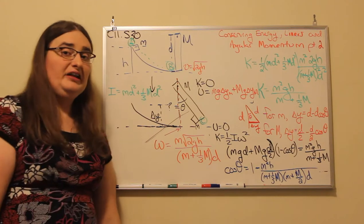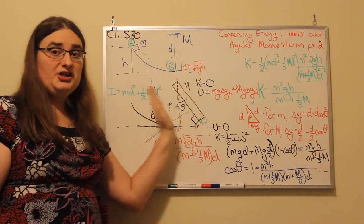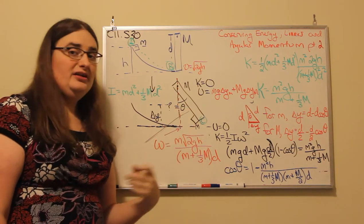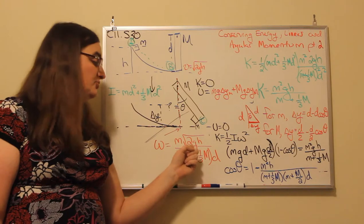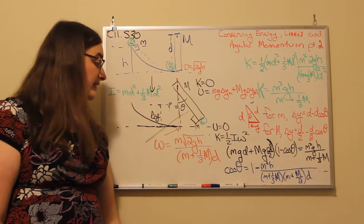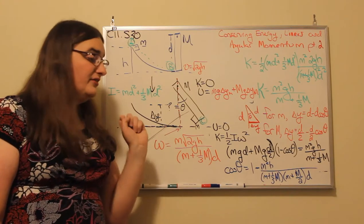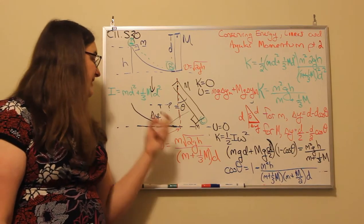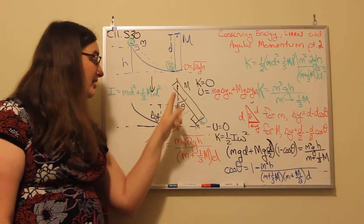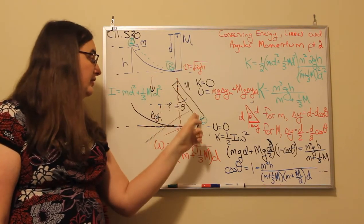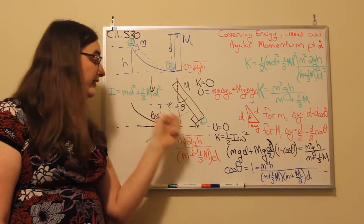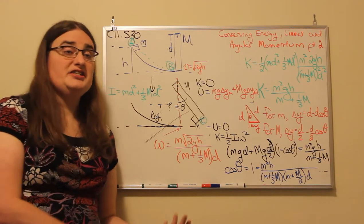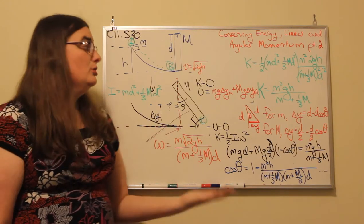We then looked at the collision using conservation of angular momentum. The angular velocity of the object free to rotate — the little mass stuck to a bar of mass big M — would be equal to little mass m times its speed √(2gh), divided by little mass plus one-third the big mass, times the length of the bar d. That denominator came from the total rotational inertia: one-third times big mass times d squared plus little mass times d squared.